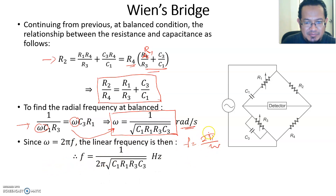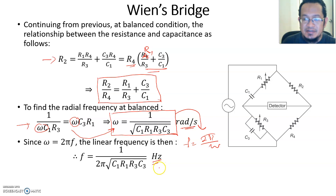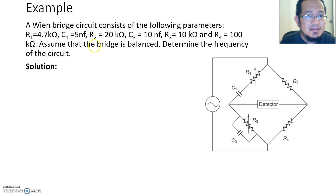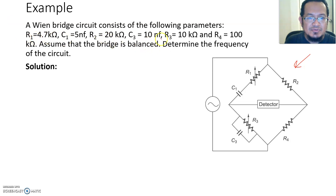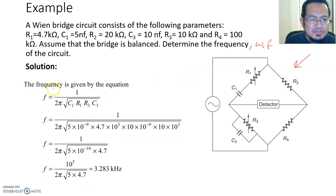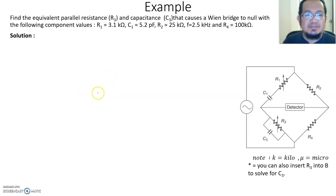Let's look at Example 1. You have a Wien Bridge with all parameters given: R1, C1, R2, C3, R3, and R4. Assume the bridge is balanced and determine the frequency. The question asks for frequency in hertz. Using the frequency formula, plug in all the capacitance and resistance values — C1, R1, C3, R3 — crunch the numbers, and that gives your final answer. That's straightforward.